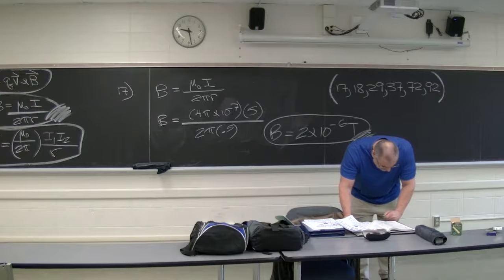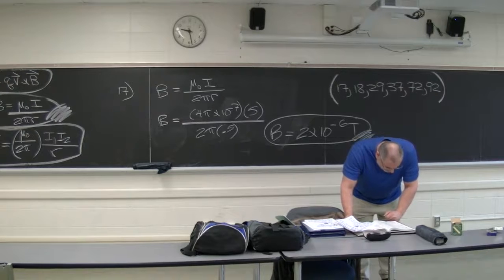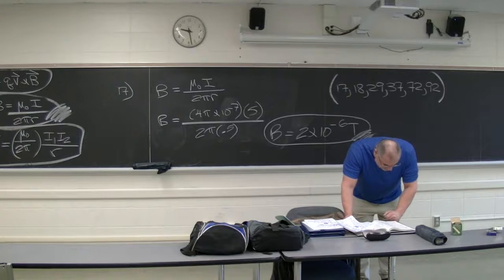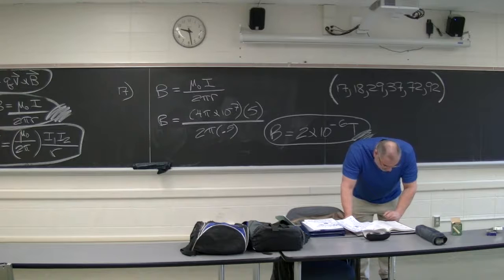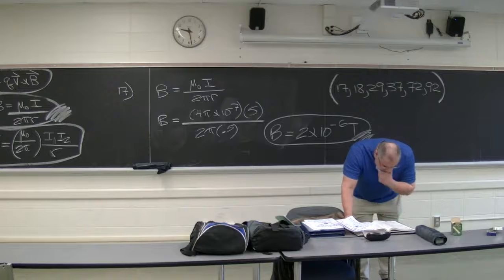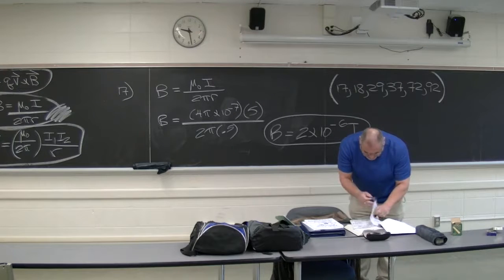Let's look at problem 18. This is right out of your book, so make sure you're looking at your book when going through this. Problem 18 from Chapter 30: Two long straight parallel wires are shown in the figure. The current in the wire on the left is double the current in the wire on the right. Find an expression for the magnetic field at points A and B. Use identical coordinate system to write your answer in component form.